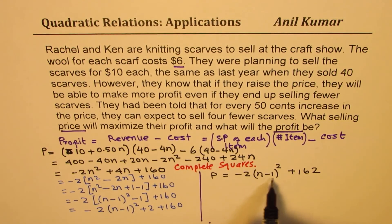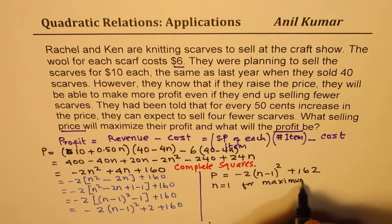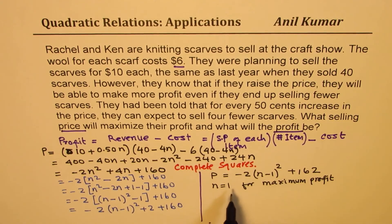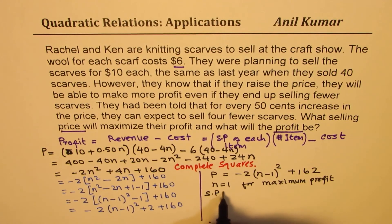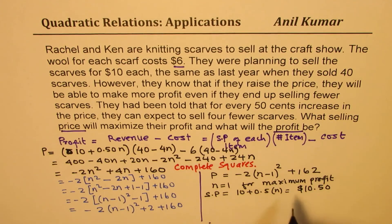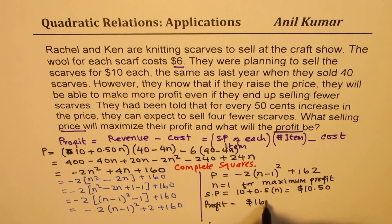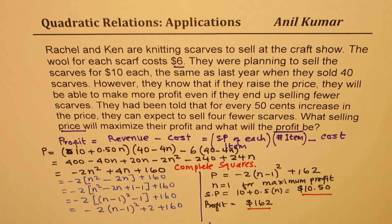To maximize profit, n should equal 1. So n = 1 for maximum profit. The selling price will be $10 + 0.50 × 1 = $10.50. And the total maximum profit is $162. So by raising the price by 50 cents, they get a profit of $162.